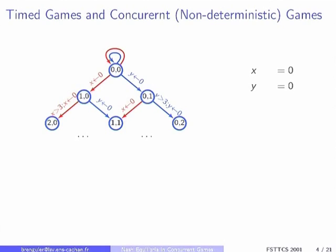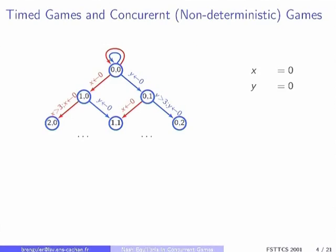Our model: in the beginning we were interested in timed games, which are nice to model real-time systems. In this model you have states and clocks. You can reset the clocks and compare them to some constants — for instance, y is greater than 3. So it's not a timed automaton, it's a timed game. Transitions are either red or blue, so transitions are controlled by players. The red transitions are controlled by the red player and the blue transitions by the blue player. You can have as many players as you want; here I only have two.